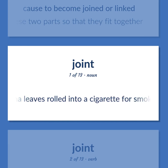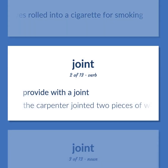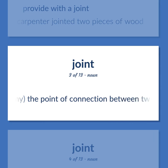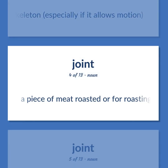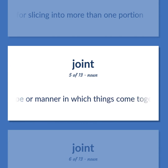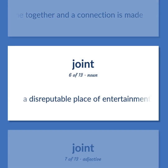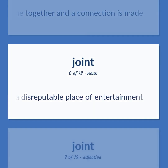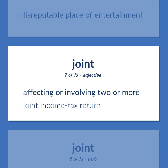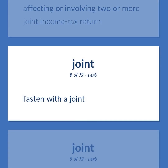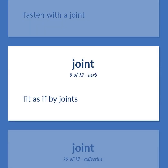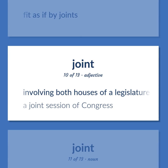Joint (continued): Marijuana leaves rolled into a cigarette for smoking. Provide with a joint — the carpenter jointed two pieces of wood. Anatomy — the point of connection between two bones or elements of a skeleton, especially if it allows motion. A piece of meat roasted or for roasting and of a size for slicing into more than one portion. The shape or manner in which things come together and a connection is made. A disreputable place of entertainment. Affecting or involving two or more — joint income tax return. Fasten with a joint. Fit as if by joints. Involving both houses of a legislature — a joint session of Congress.